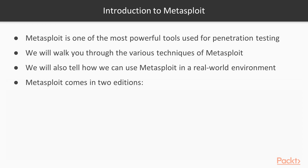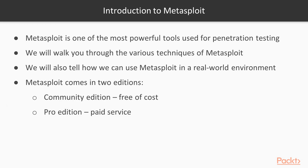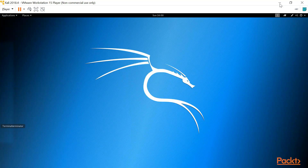Metasploit is available in two editions. The first is the Community Edition, which is completely free. The second is the Pro Edition, which has many more features and is a paid service. In this video we will use the Metasploit Community Edition that is pre-installed in Kali Linux. If you want to use Metasploit on your Windows PC, you can download it from the official website at rapid7.com.